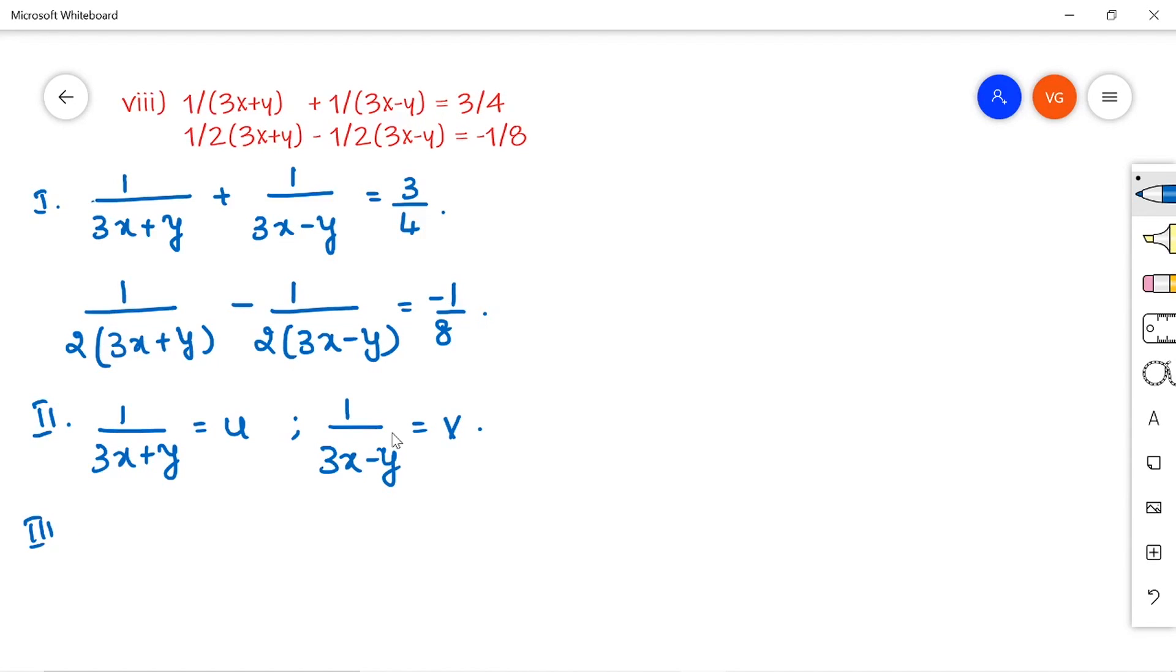Substitute in that main equations, we will get u plus v is equal to 3 by 4. Here, this part I am replacing with u. This is v.